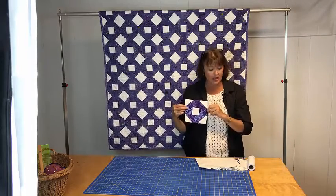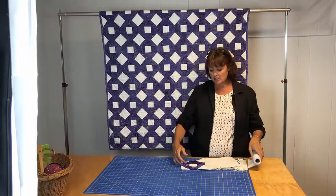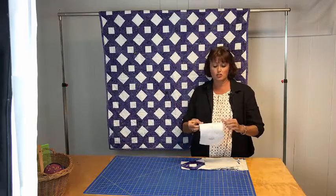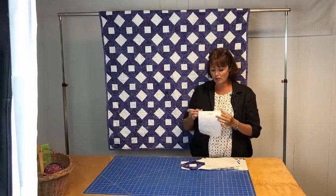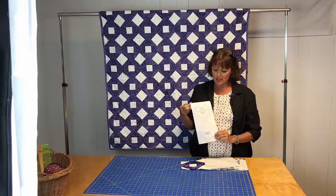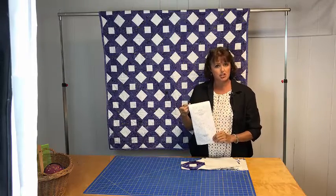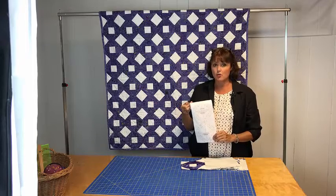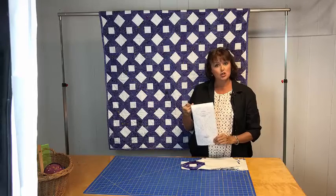So we're going to go ahead and make this block. I'm going to be using a product today to make this called Triangles on a Roll. I love this product. I use it a lot in my quilts. This particular roll is going to make two inch finish half square triangles, and those are what we're going to be using in the block.